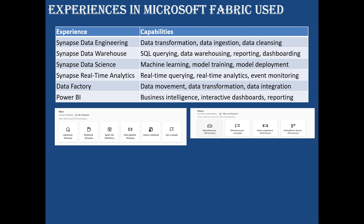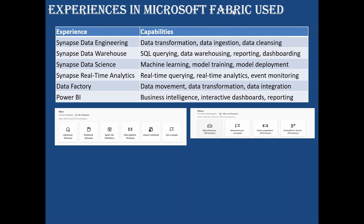The warehouse can fetch data from warehouse storage or from a lakehouse — you can create external tables to read data from the lakehouse. Data pipelines can be used here for data ingestion and scheduling. Data Flow Gen2 is used for data transformation — you can load transformed data into the data warehouse and query it.